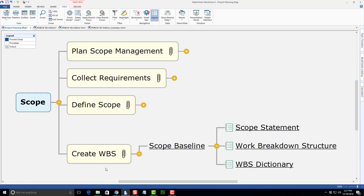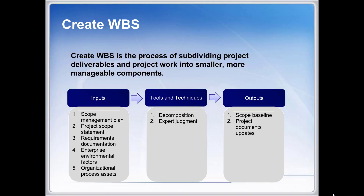The next feature I'd like to present is how I've linked to a Google Slide on my Google Drive. This paper clip, as you can see, represents a link. If I click on this link, it's going to open the Google Slide. This slide shows the inputs, tools and techniques, and the outputs for Create WBS.